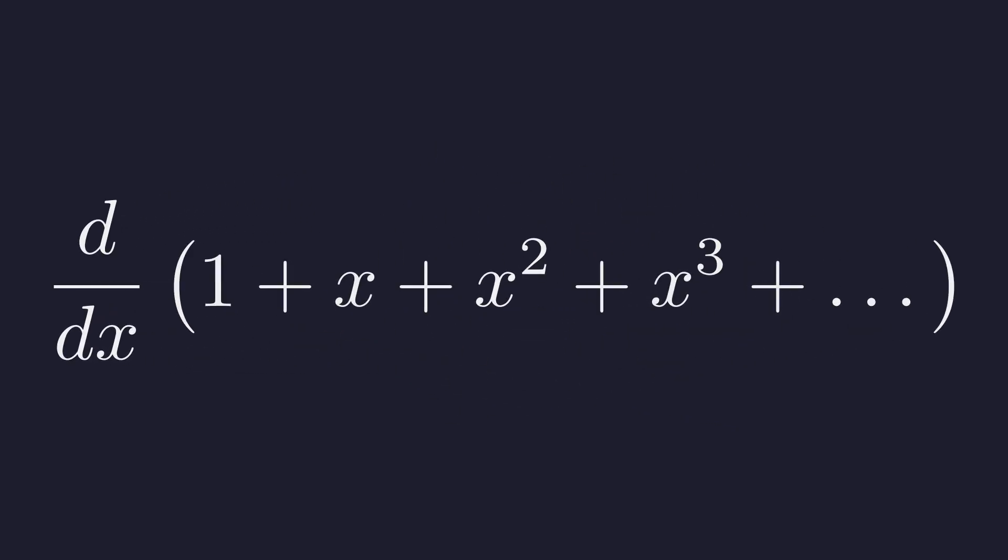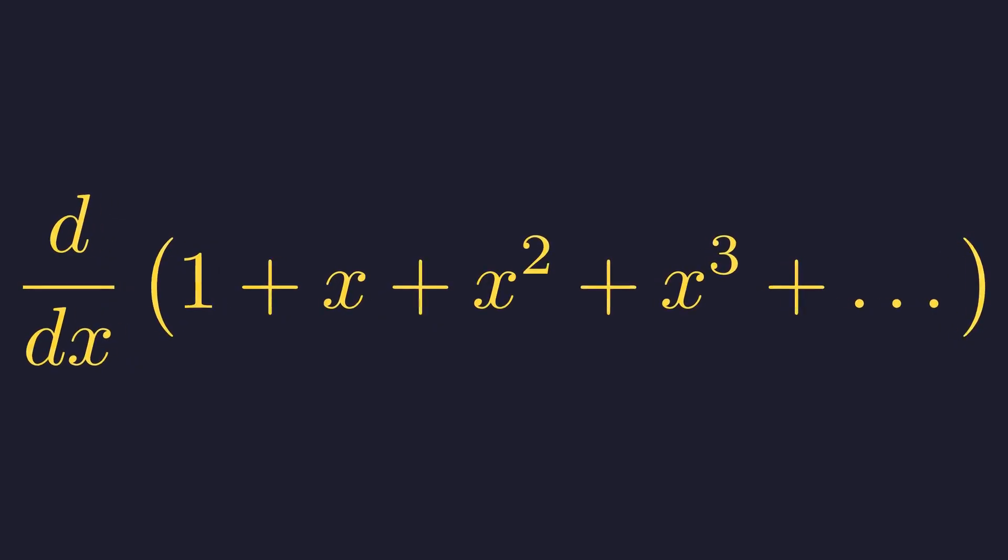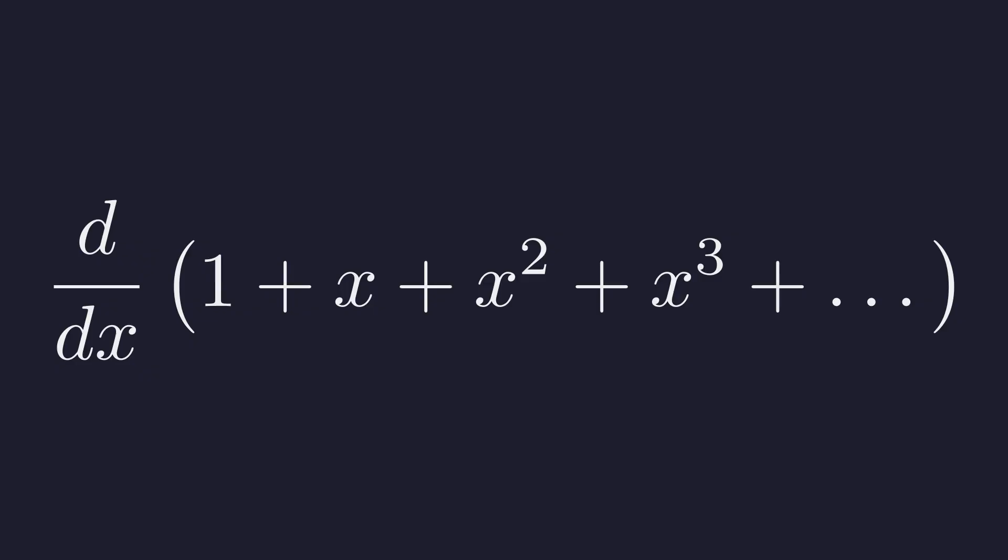For n equals 0, we have 1. For n equals 1, we have x. For n equals 2, we have x squared, and so on. For a convergent power series, we can differentiate term by term. Let's apply the power rule to each term.